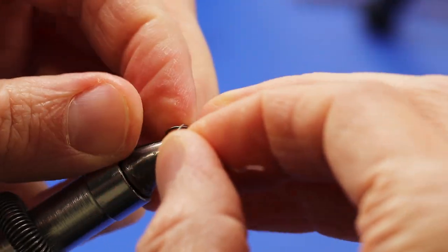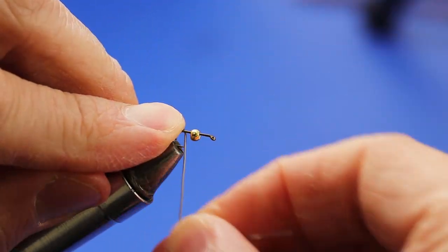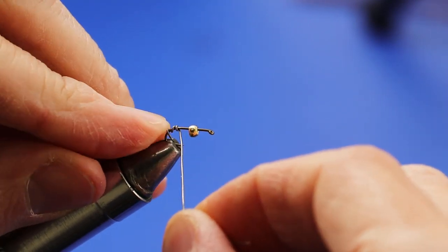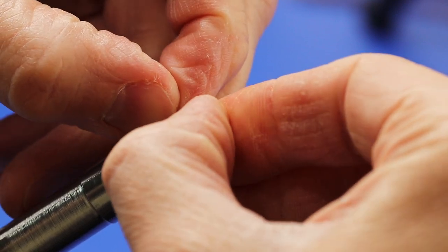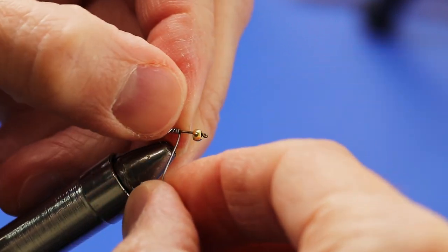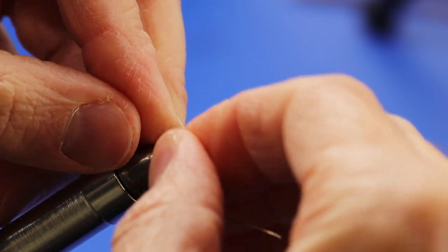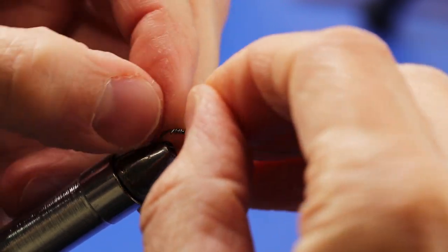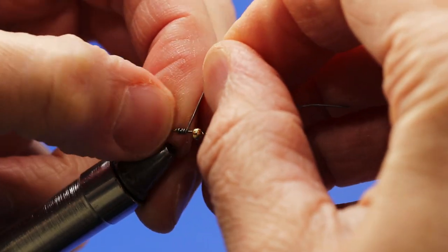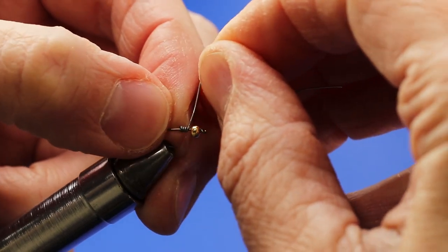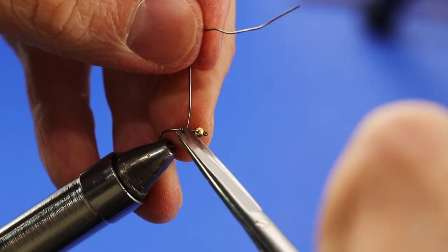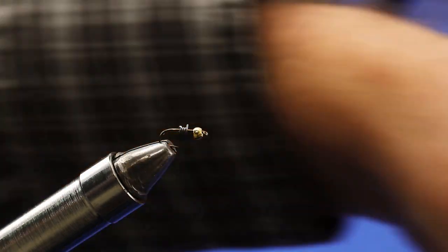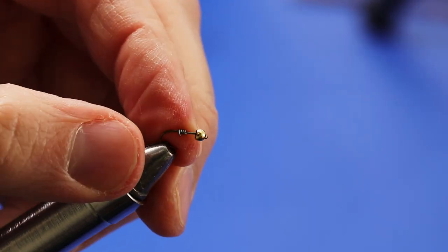I'm going to come in with some 0.015 lead wire and give it maybe four or five wraps of lead wire here. You don't need a lot - you basically just need enough to secure that bead head and then peek out the back of that bead head there. Any more and this fly has some pretty extreme taper, so any more than that and you'll start to really screw with your taper on this fly. Go ahead and use my dull scissors, trim that off there.